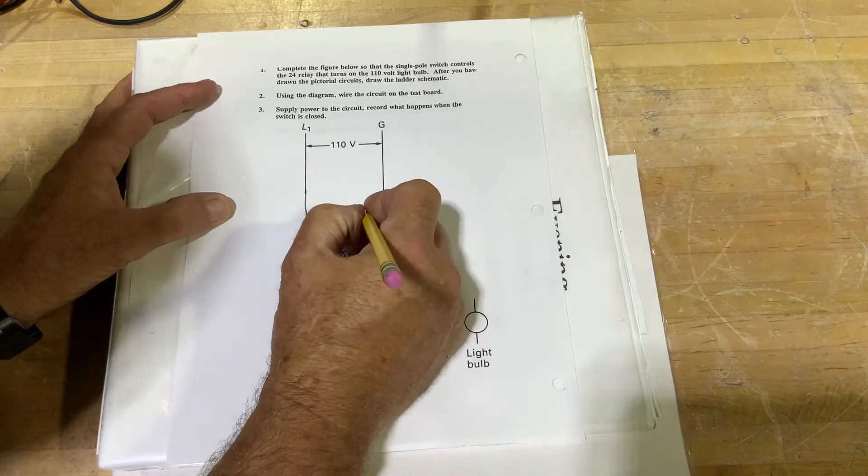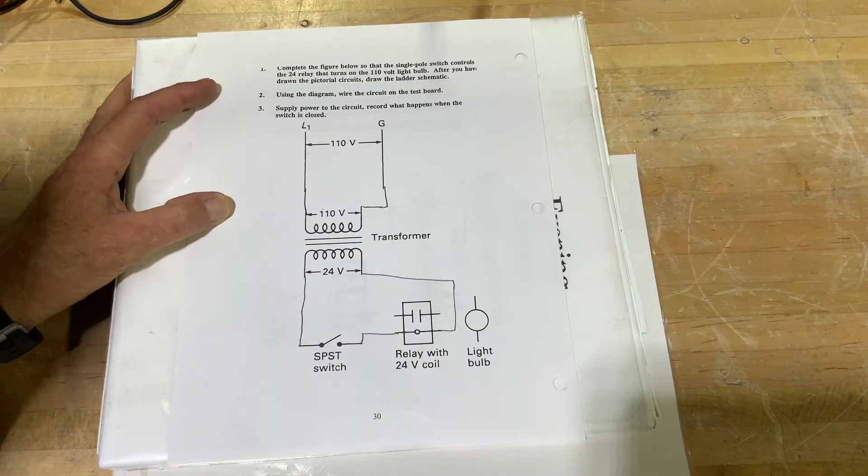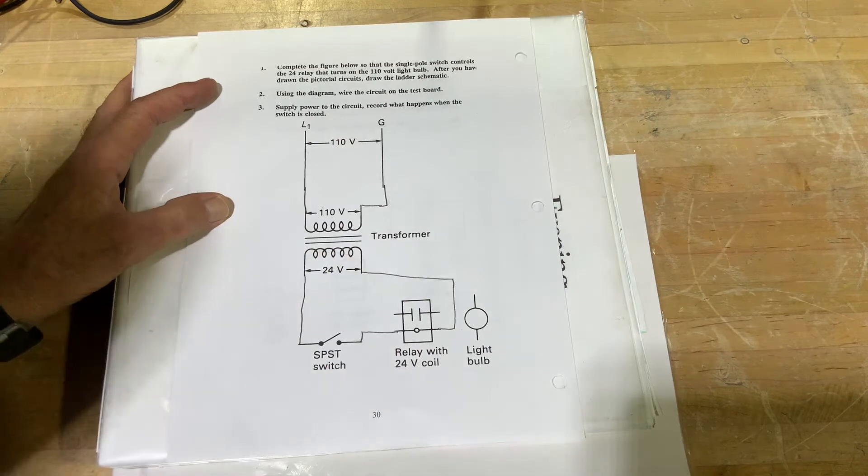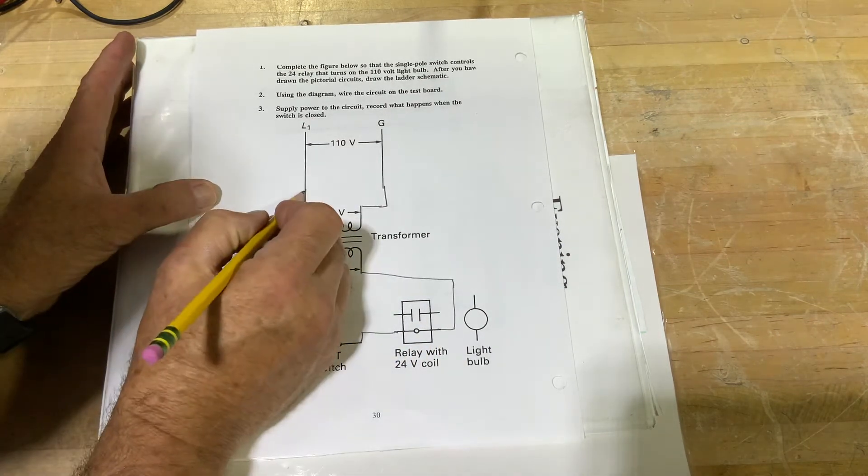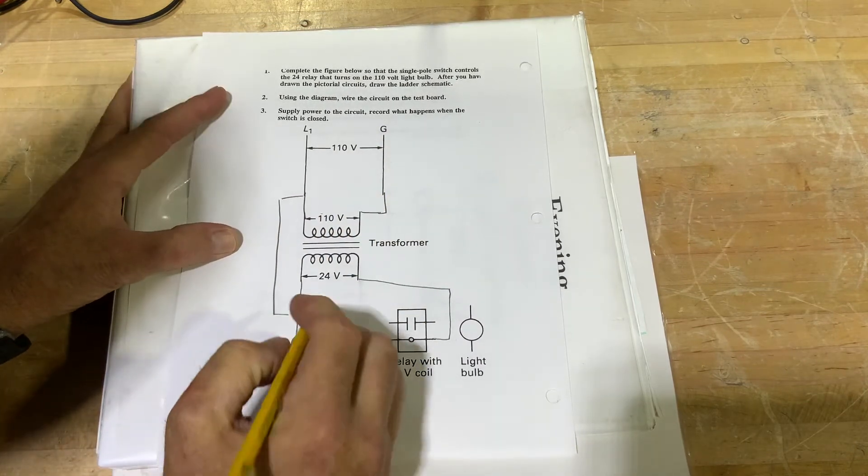We're not going to get any 24 volts out of it, so we're just going to connect our transformer. We have a 110 volt light bulb, 120 volt light bulb, so we need to come off of that power side.